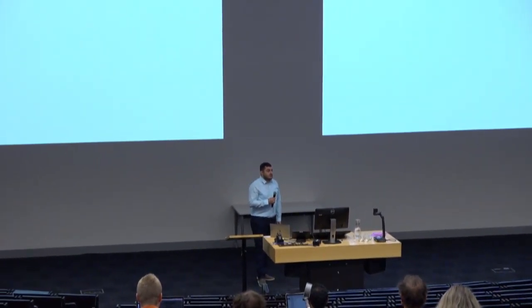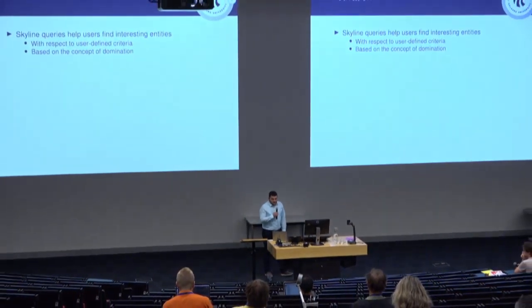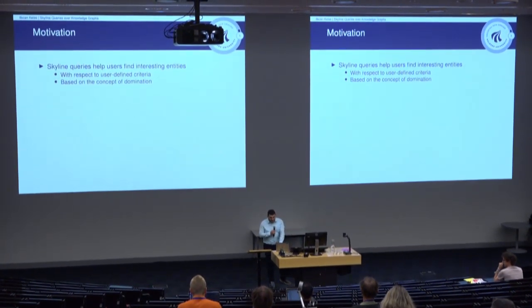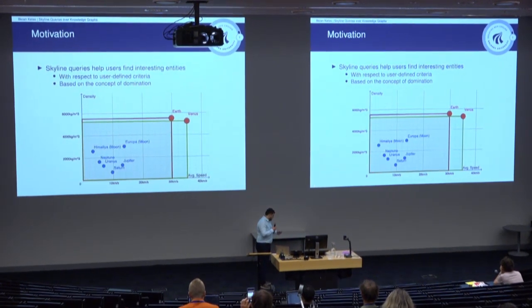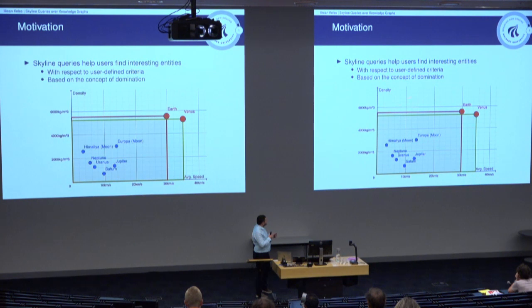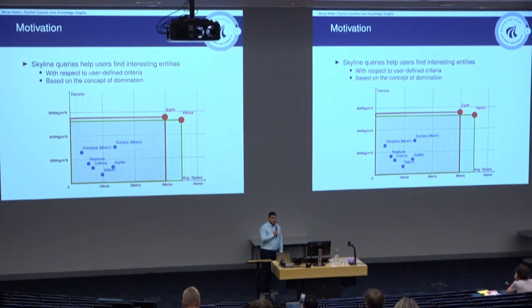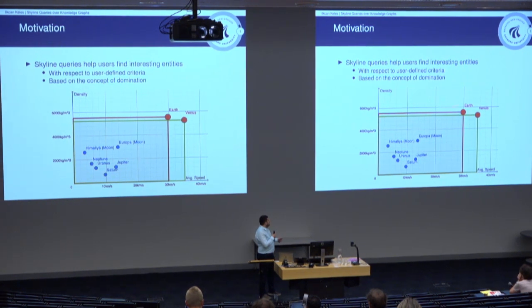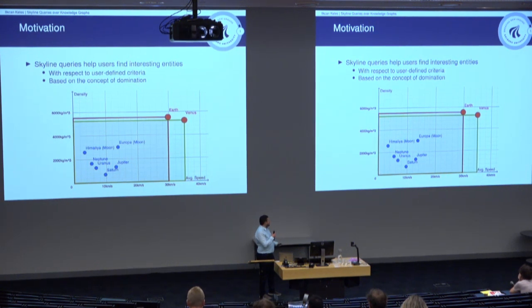I will first explain why we are interested in Skyline queries. We think that Skyline queries help users find interesting entities without providing any specific weights, with respect to multiple user-defined criteria. It is based on the concept of domination. Here is an example: a dataset of planets with density and average speed attributes. If we want a planet with high density and high average speed, some planets are irrelevant because they are dominated by Earth and Venus. The rectangles present the dominance region.